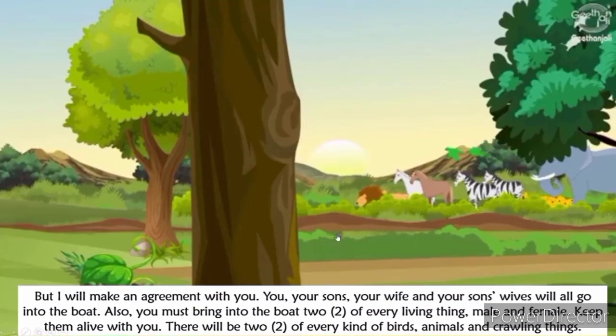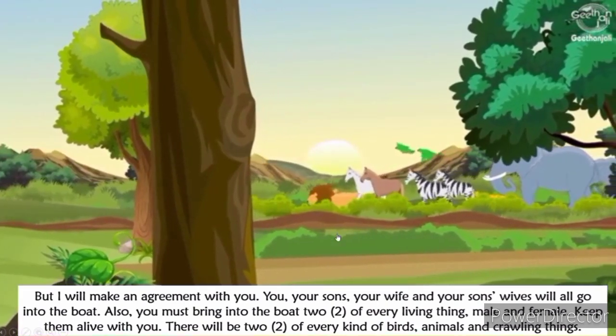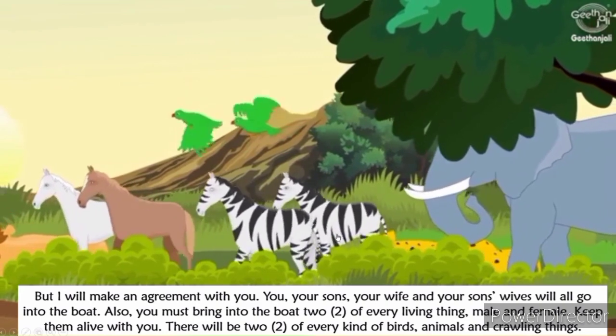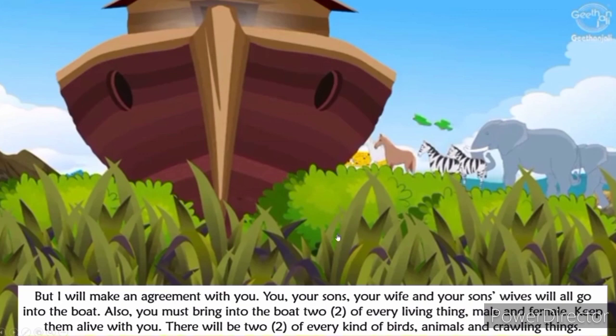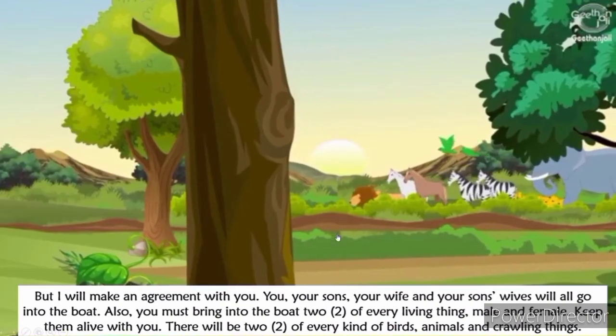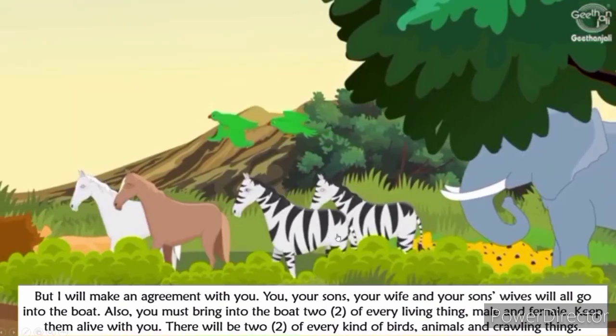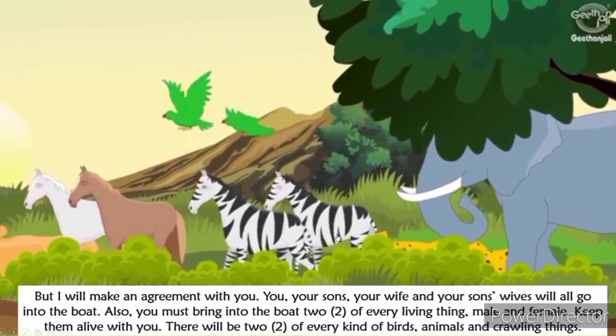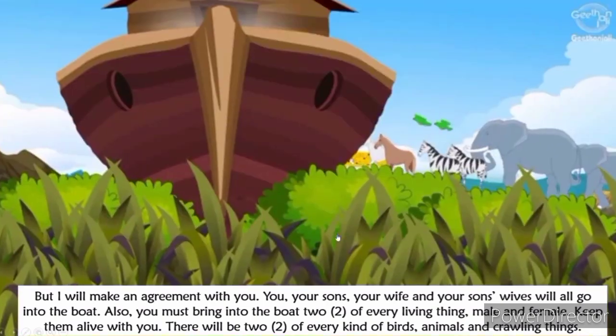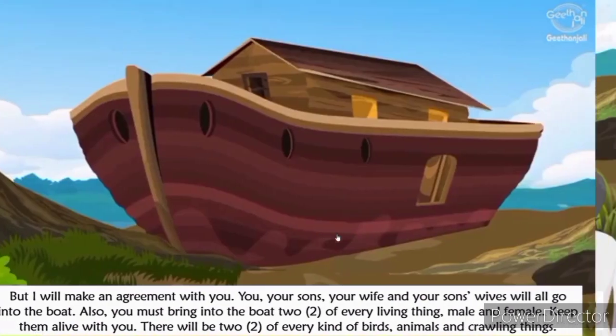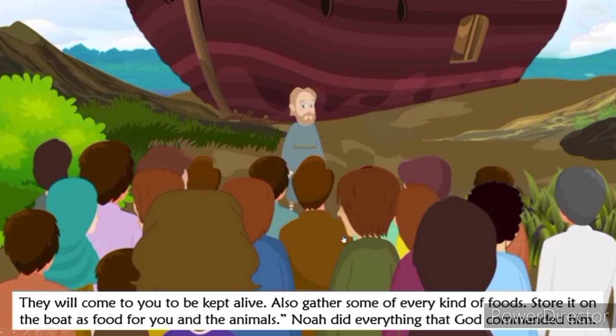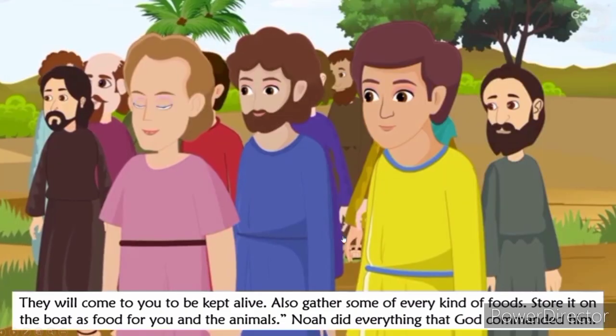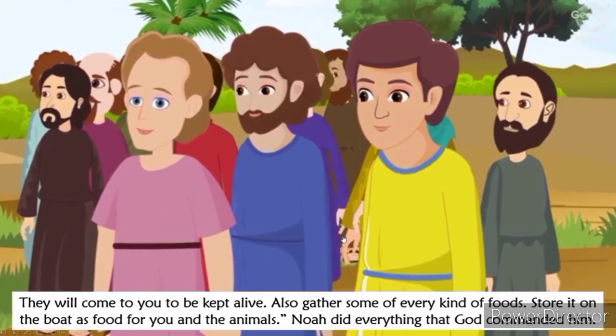But I will make an agreement with you. You, your sons, your wife, and your son's wives will all go into the boat. Also, you must bring into the boat two of every living thing, male and female. Keep them alive with you. There will be two of every kind of birds, animals and crawling thing. They will come to you to be kept alive. Also gather some of every kind of food. Store it in the boat as food for you and the animals. Noah did everything that God commanded him.